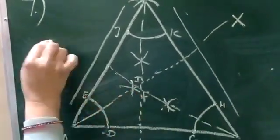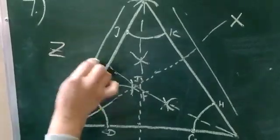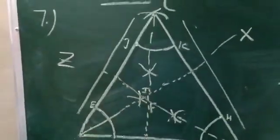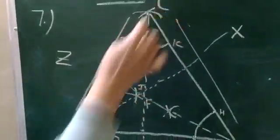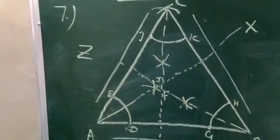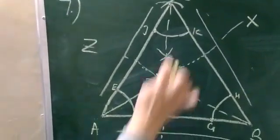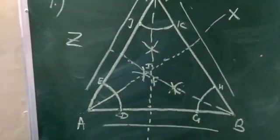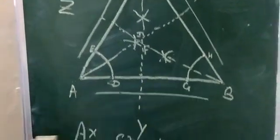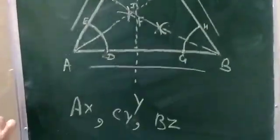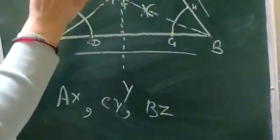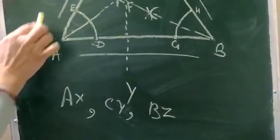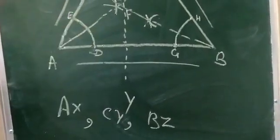So you are having three lines of symmetry: AX, CY, and BZ. In this way you can find the lines of symmetry of an equilateral triangle.